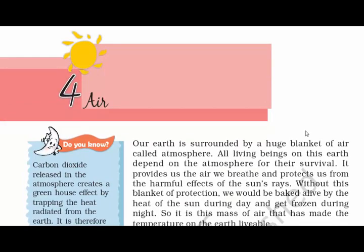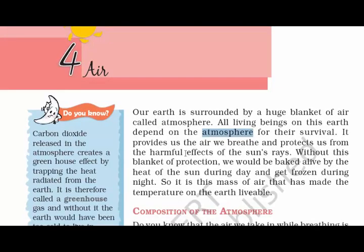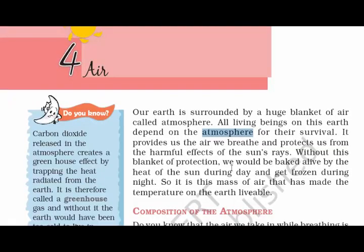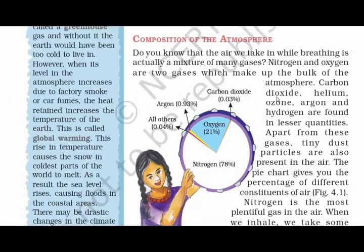Earth is surrounded by a huge blanket of air called the atmosphere, and we all are dependent on it for our survival. It not only provides us the air we breathe, it also protects us from the harmful effects of the sun's rays. If there was no atmosphere, we would have been burned alive by the heat of the sun during the day, and at night we would get frozen. So it is the mass of air that has made the temperature on Earth liveable.